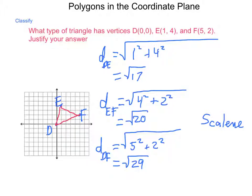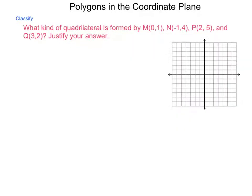And now, let's take a look at one for quadrilateral. What kind of quadrilateral is formed by the points given? M, N, P, and Q. Then, justify your answer. Here, we're going to be looking at side lengths and slopes. So, we have a bit more work to carry out. But, let's start by plotting our points.